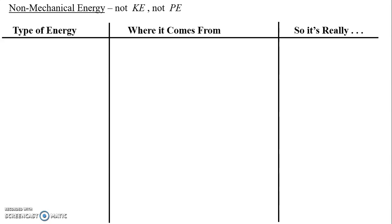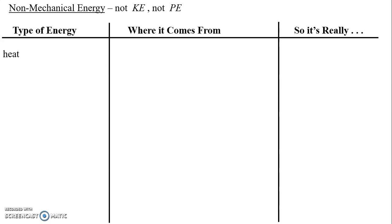Usually one of the first types of non-mechanical energies that students identify is heat. Where does heat come from? When you rub your hands together, you generate heat from friction. What's actually happening at the subatomic level is that the atoms of one object are colliding with the atoms of the other object, generating heat. So it comes from collisions among particles. If these particles are moving, that means it's really a form of kinetic energy — just at the subatomic, microscopic level. So we call it a non-mechanical form of energy.